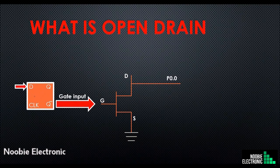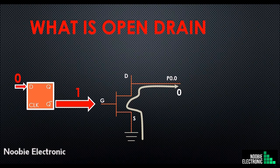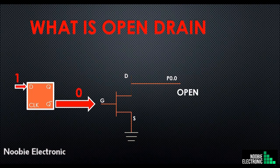The 8051 applies gate input through a D-latch. When we write 0 to bit 0 of port 0, the 8051 sends that 0 to the D-latch input, which in turn sends a high signal to the gate input. A high input at the gate shorts drain and source, so 0 will appear on port 0 pin 0. Conversely, writing 1 sends a low signal to the gate, disconnecting drain and source, resulting in a floating output at port 0 pin 0.